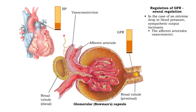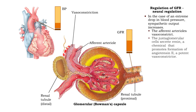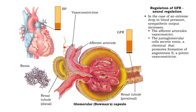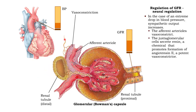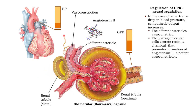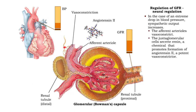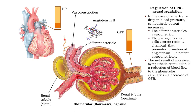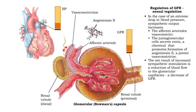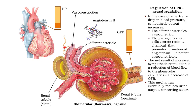the afferent arterioles vasoconstrict. Then, the juxtaglomerular cells secrete renin, a chemical that promotes formation of angiotensin 2, a potent vasoconstrictor. The net result of increased sympathetic stimulation is a reduction of blood flow to the glomerular capillaries and thus a decrease of glomerular filtration rate. This mechanism eventually reduces urine output, conserving water.